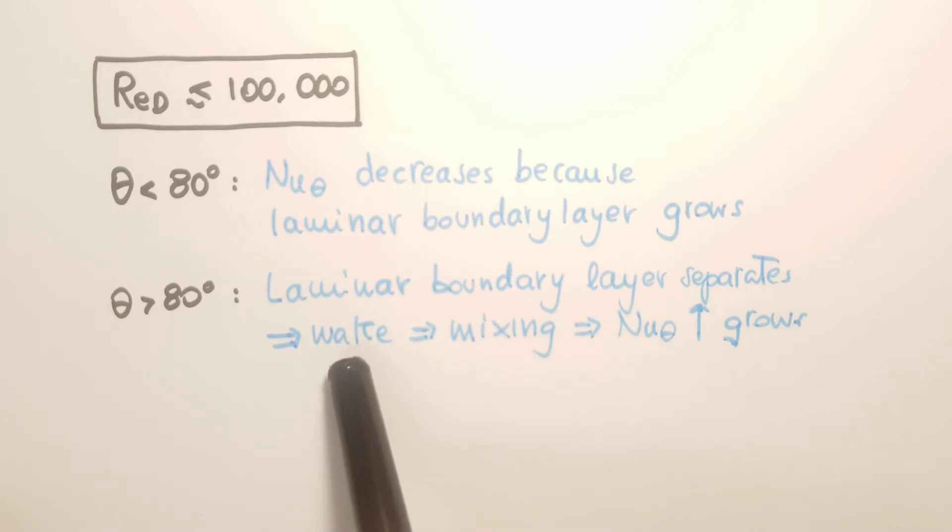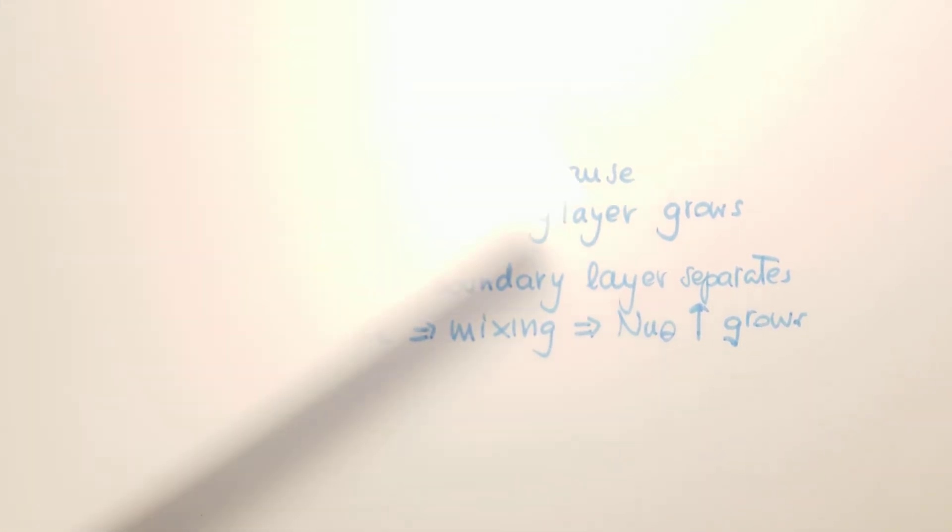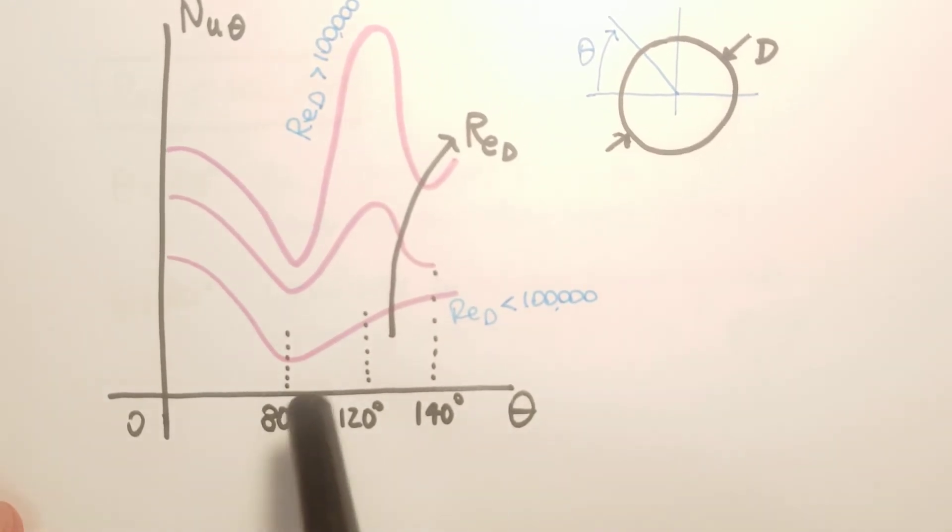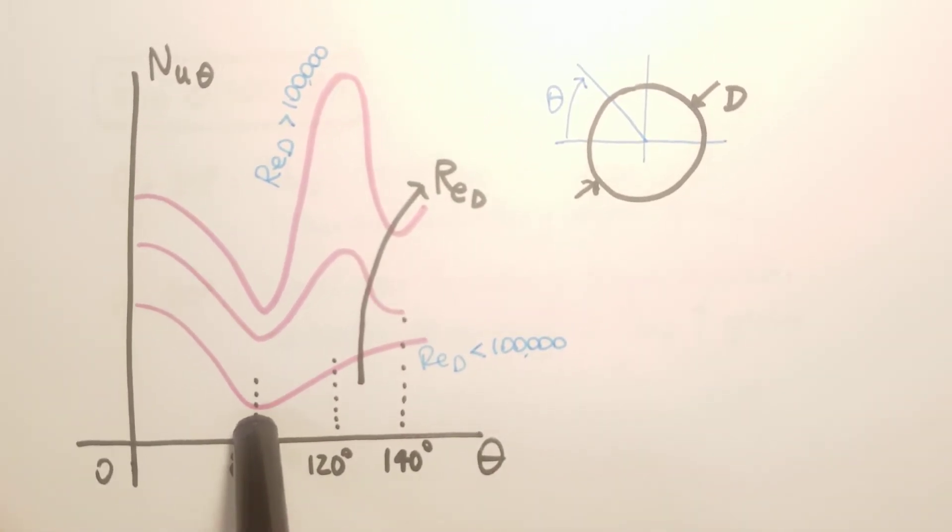Therefore, we have a wake at the back of the cylinder and the sphere, so we have a lot of mixing, and that's the reason why the Nusselt number starts to grow after separation. This is what happens here. Point of separation at 80 degrees.